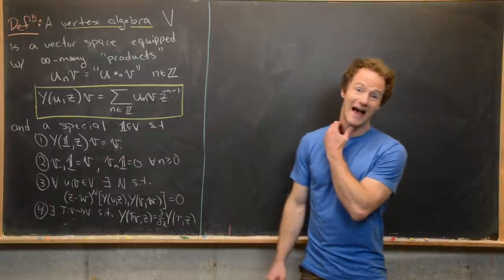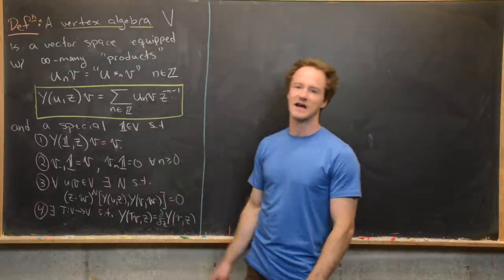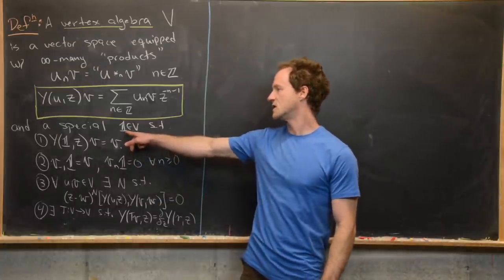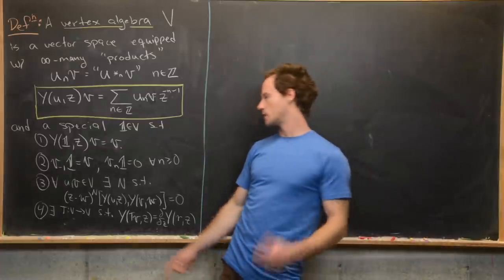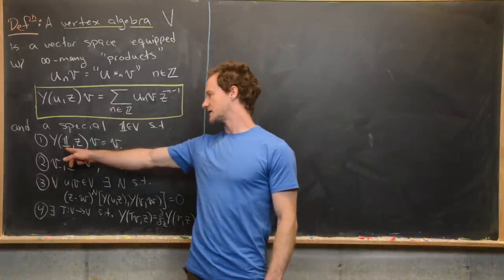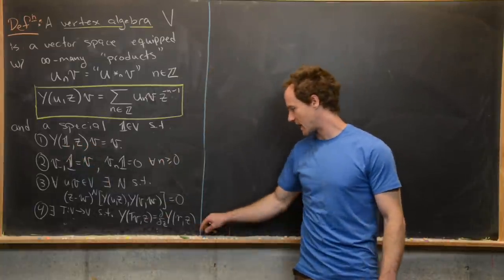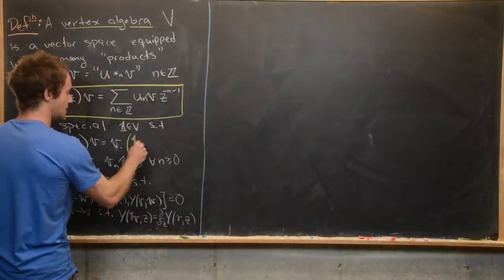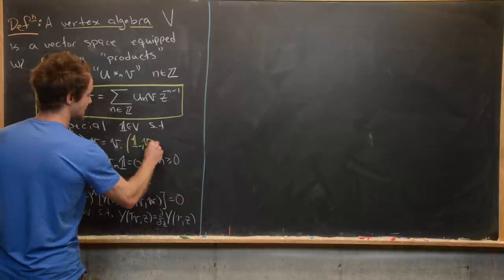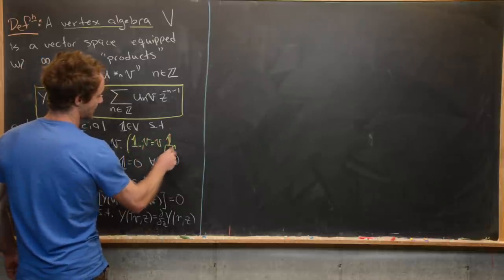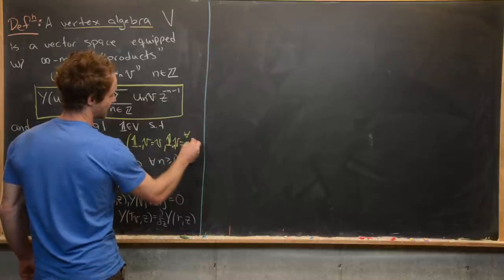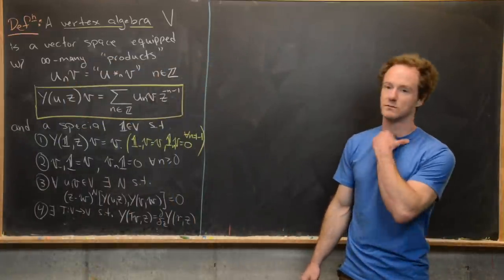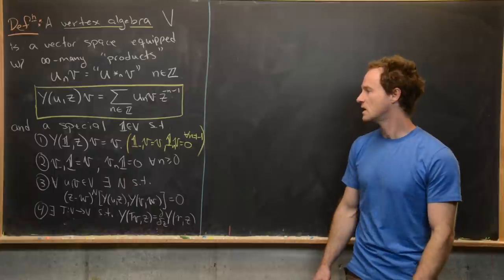The first axiom concerns a vacuum element: there is a special element in V called the vacuum, usually written as a bold script 1, which is like the identity for multiplication. If you plug it into the vertex operator and attack a vector, you get the vector back. This means that 1_{(−1)}v equals v, but 1_{(n)}v equals zero for all n not equal to −1. There's something special about this negative-first multiplication.